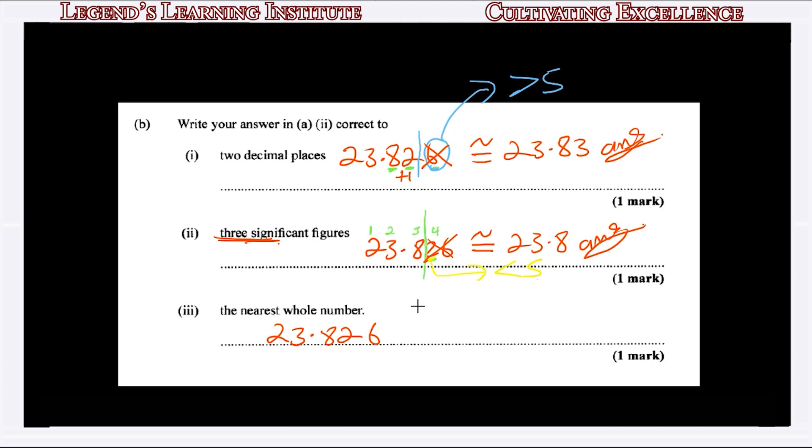The third approximation is to round 23.826 to the nearest whole number. The whole number part is 23. We put a line to the right of the 3, between the 3 and the 8. The 8 is greater than 5, so we add 1 to the 3. Therefore our answer is approximately 24.